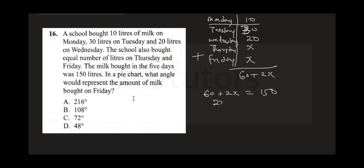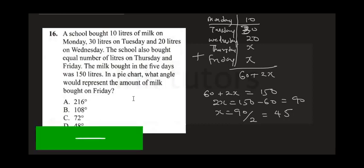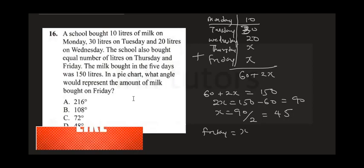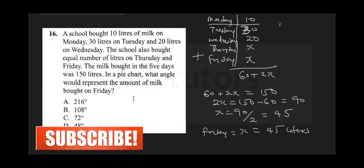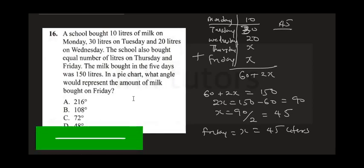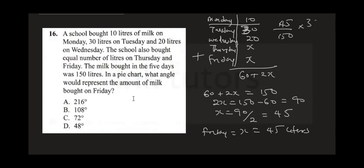Collecting like terms: 2X equals 150 minus 60, which equals 90. Therefore X equals 90 divided by 2, giving us 45. Friday's milk equals X, which is 45 liters. To represent Friday in a pie chart: 45 divided by 150 times 360.